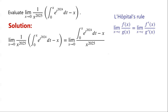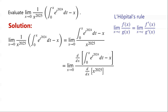By applying L'Hôpital's rule, the limit is equal to the limit of the derivative of the integral of e to the power of t to the power of 2024, dt, from 0 to x, minus x, with respect to x, over the derivative of x to the power of 2025, with respect to x, as x tends to 0. The derivative of the numerator is e to the power of x to the power of 2024, minus 1.